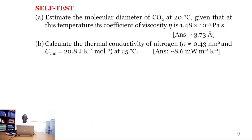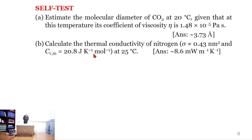Here is a self-paced question to check if you understood the workshop. Estimate the molecular diameter of CO₂ at 20 degrees Celsius, given that at this temperature its coefficient of viscosity is 1.48 times 10 to the power of negative 5 pascal seconds. The answer is approximately 3.73 angstroms. The next question says: calculate the thermal conductivity of nitrogen hydride, which has a collision cross-section of 0.43 nanometers squared and molar heat capacity of 20.8 joules per Kelvin per mole at 25 degrees Celsius. The answer is 8.6 milliwatts per meter per Kelvin.